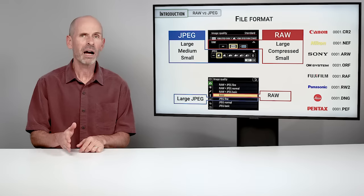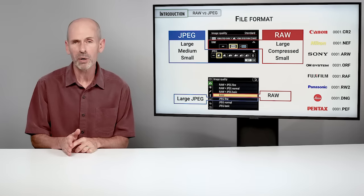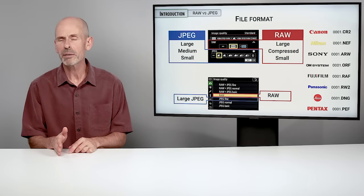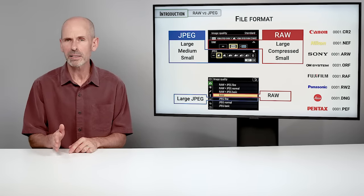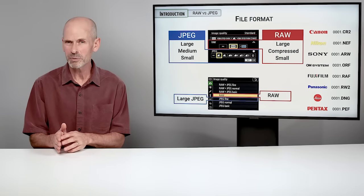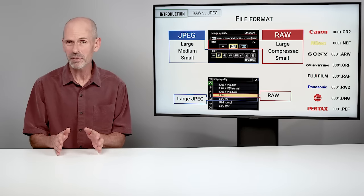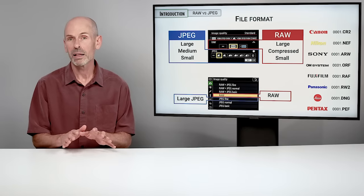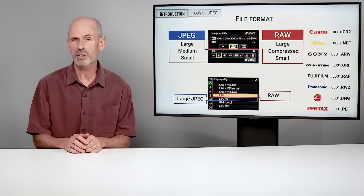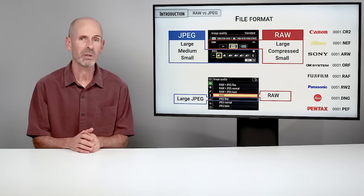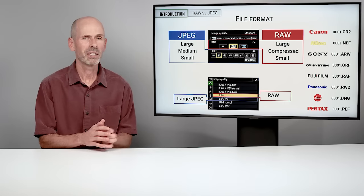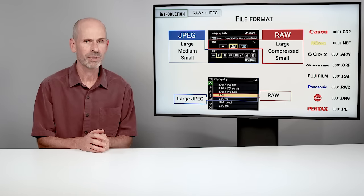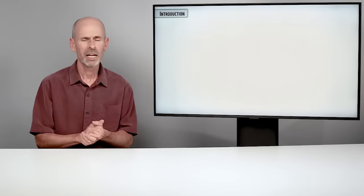If you can really dial in your exposures, you can shoot JPEG in many cases. But if an image is a little too bright or a little too dark, a RAW image is going to really help you because it gives you a lot more latitude in both areas — especially in the shadow areas.